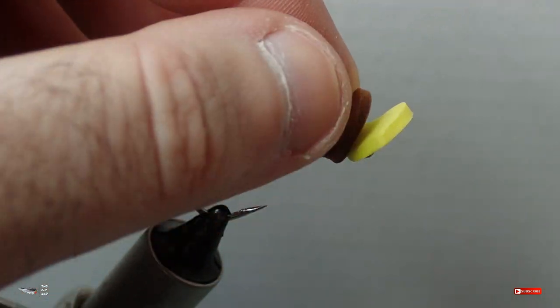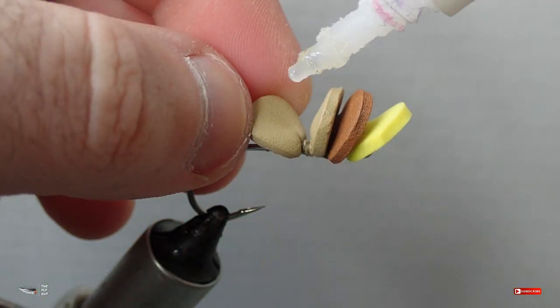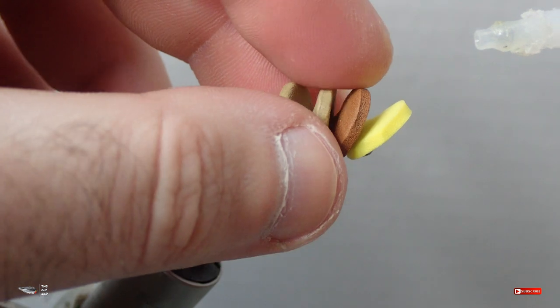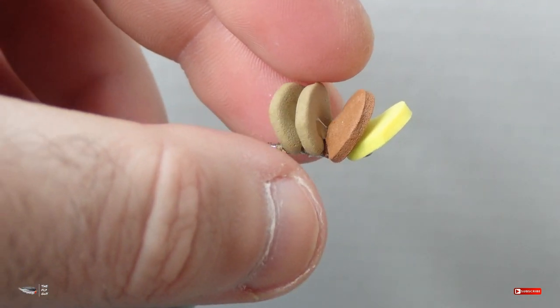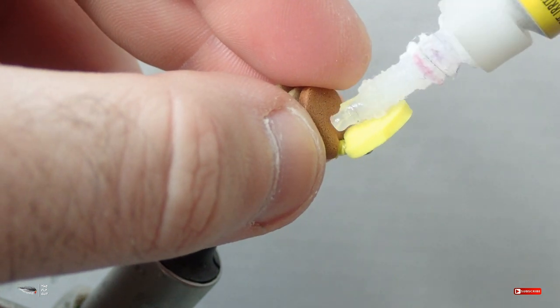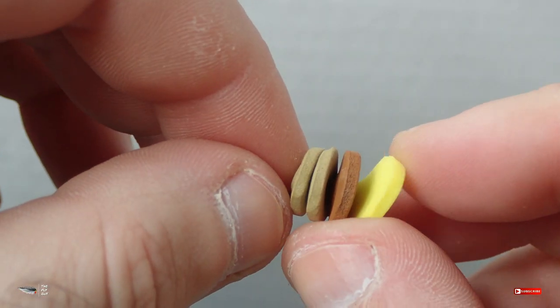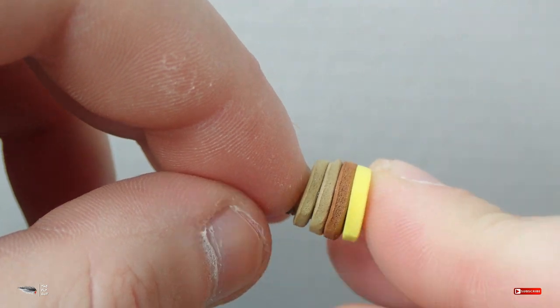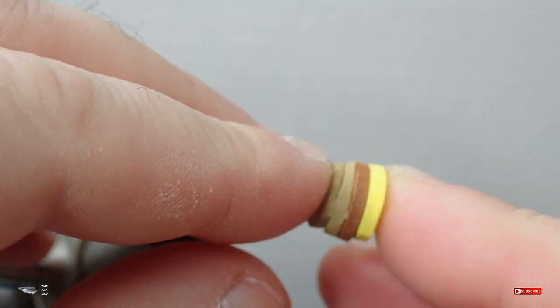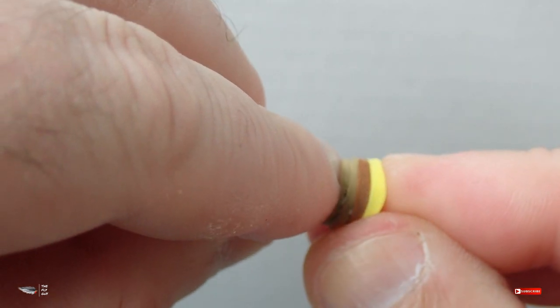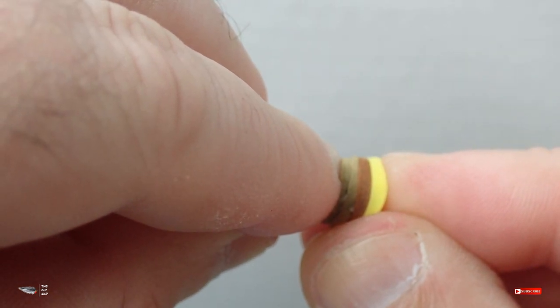Once you have your finished popper head, we're going to go ahead and glue this together so that it stays in place. You will take each foam piece and you'll place a small dot of super glue behind each one. You're going to press these pieces of foam together as straight as possible.